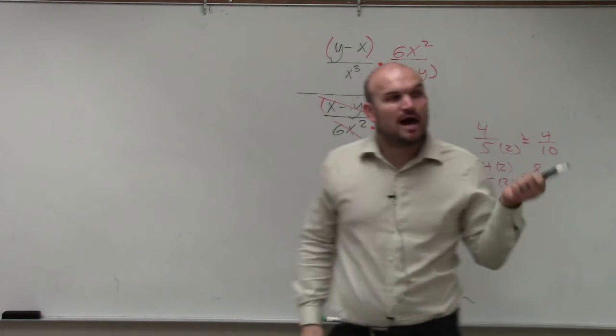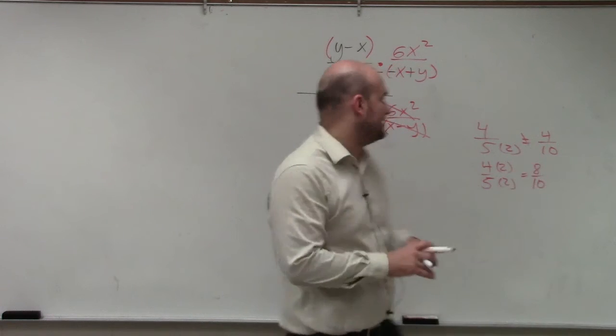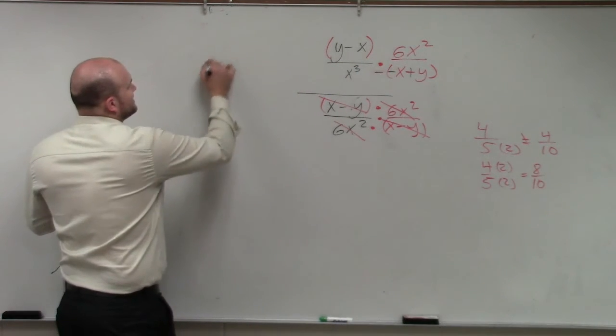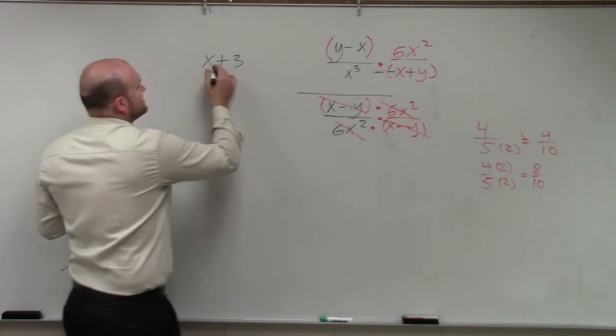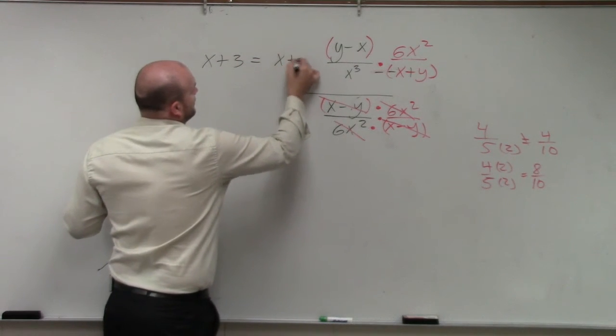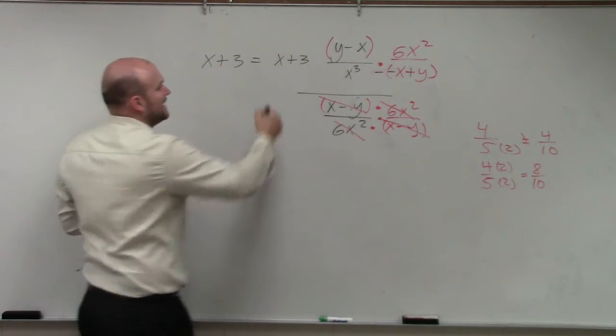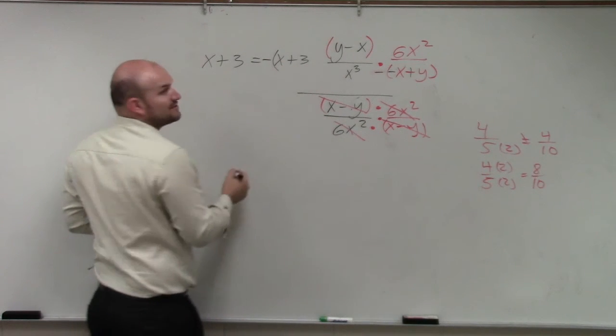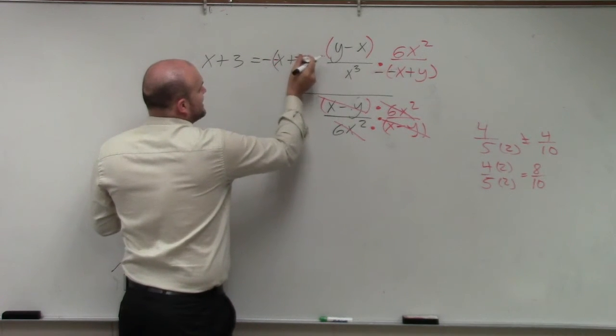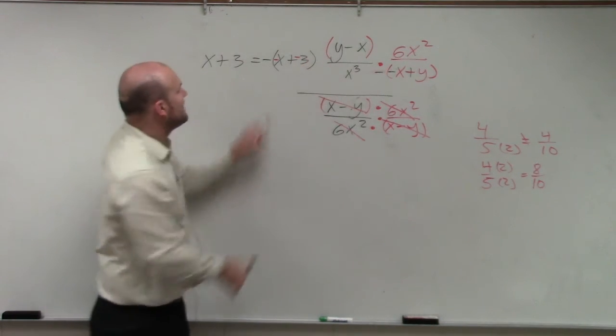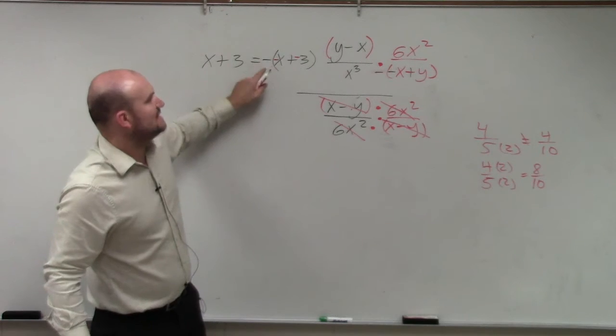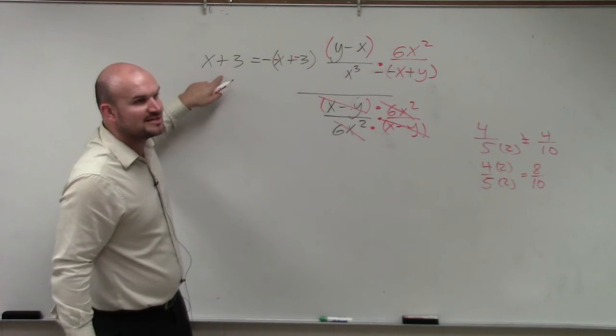I'm just factoring out. I'm not changing the value of anything. For instance, if I have the example x plus 3, right? And let's say I factor out a negative. When I factor out a negative, that makes that negative, and that makes that negative. Do you agree with me? That negative times negative x and negative times negative 3 is the same thing as positive x plus 3?